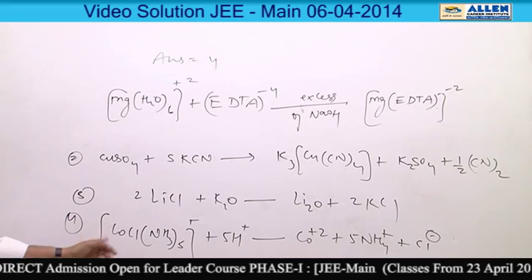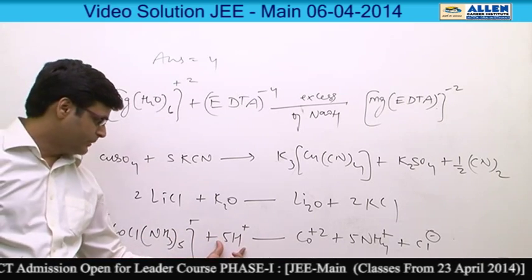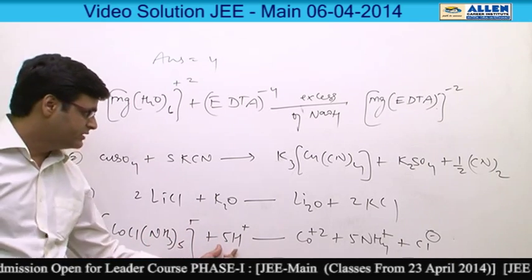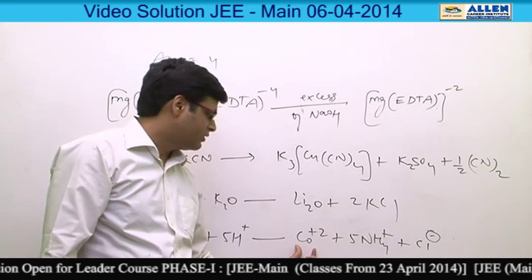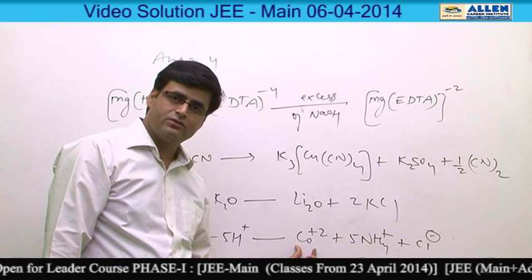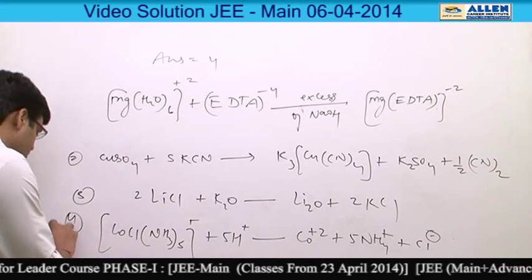Because in presence of proton, ammonia will be protonated and ammonium cation is formed, and cobalt +2 ion is formed. Cobalt +2 ion is present in aqueous solution, so that's why answer is fourth.